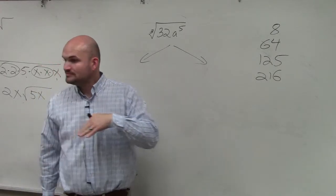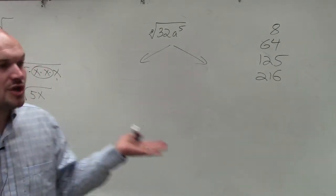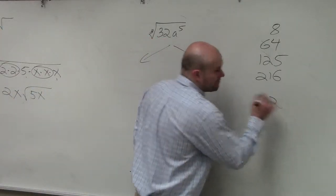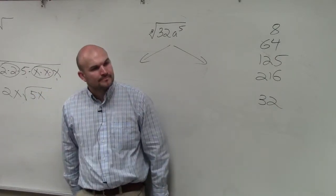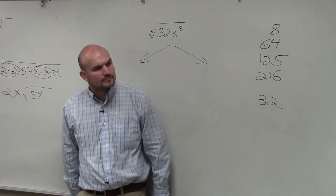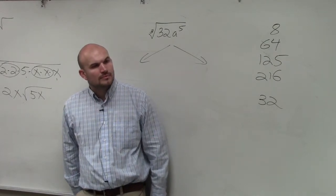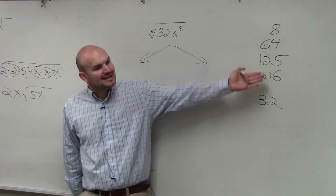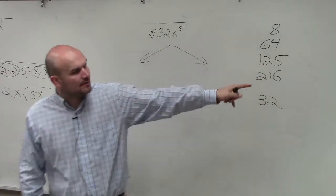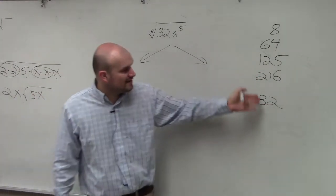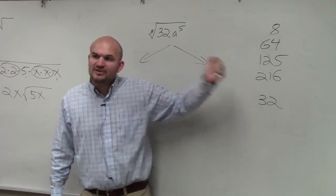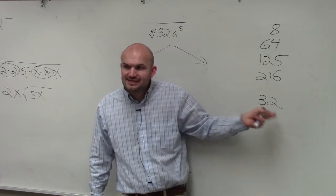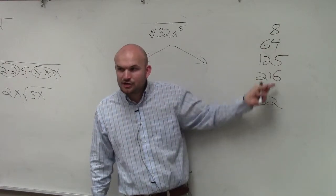However, we can also use prime factorization. So let's do the prime factorization for this problem first. If you have a number and you're trying to take the square root, I would look into using the square numbers. If you have a number and you're trying to take the cube root, use the cube numbers. The main important thing is you know that you cannot take the cube root of 32 — 32 is not a cube number.